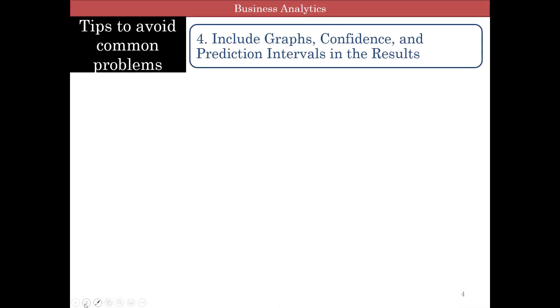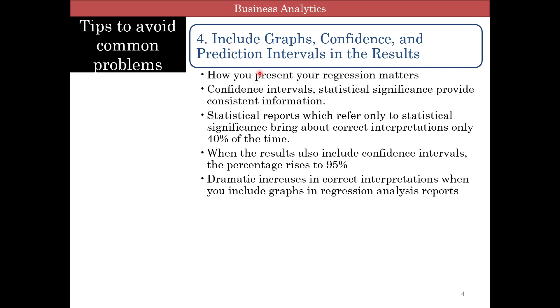Tip number four, how you're presenting your data matters. Use graphs, confidence, and prediction intervals for the results. There are enough studies that show that when you only show statistical significance, people kind of have the wrong interpretation about 60 percent of the time. When you're showing graphs and confidence intervals, the percentage rises to 95 percent. So there's a dramatic increase in correct interpretation when you include graphs in regression analysis reports.